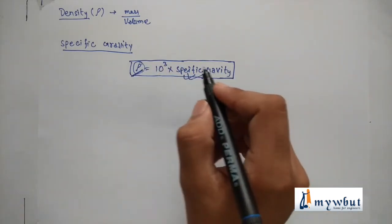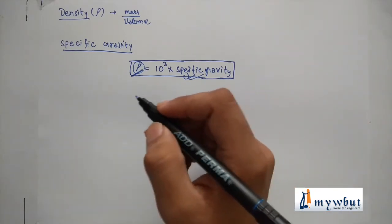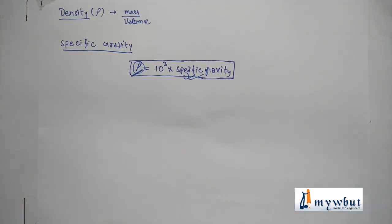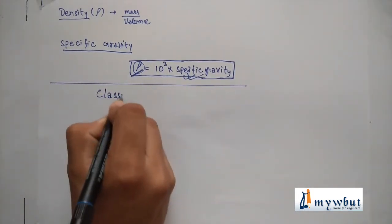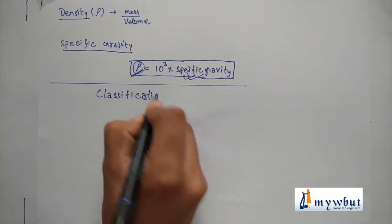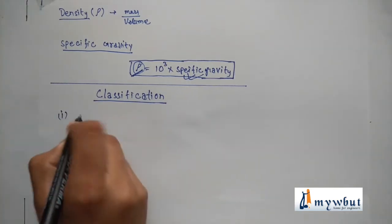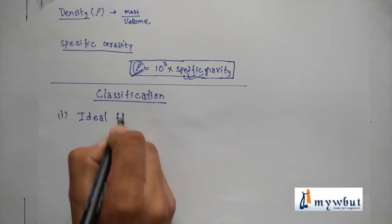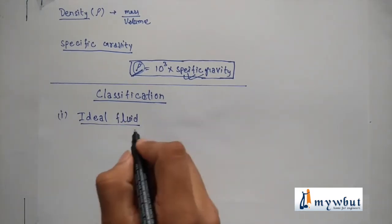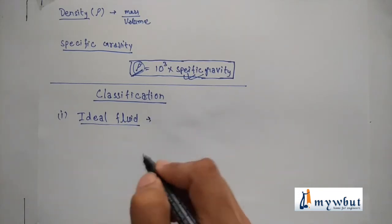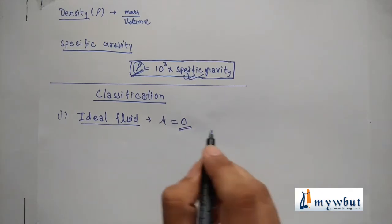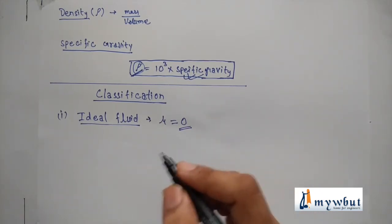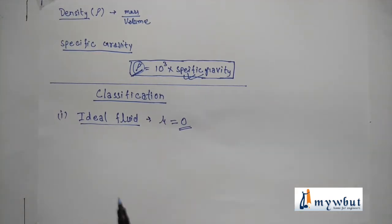So far we have learned different properties of fluid. Now let us learn about different types of fluid — classification of fluid. The first type is ideal fluid: a fluid that has zero viscosity, meaning it offers no resistance during flow, so mu equals zero. Practically, no fluid is ideal, but for easy calculation we sometimes prefer to treat fluid as ideal.